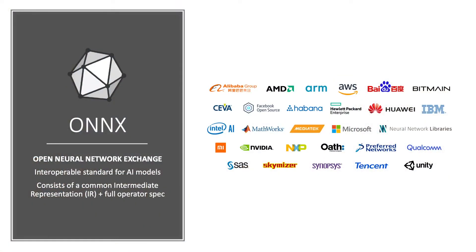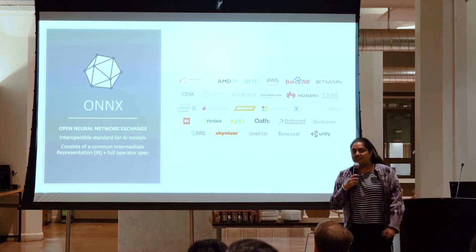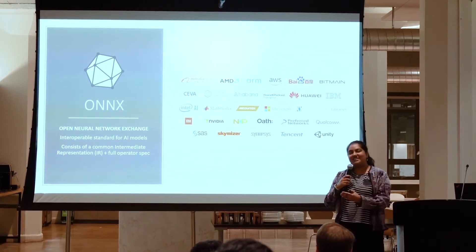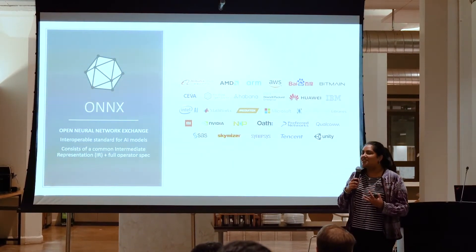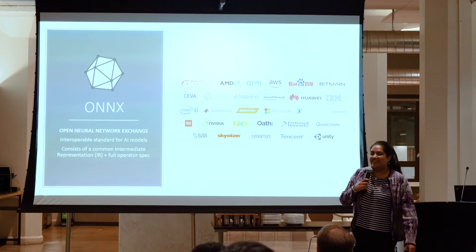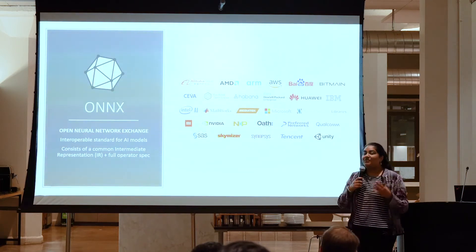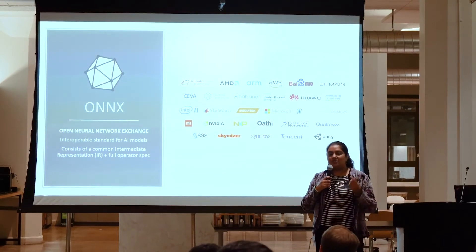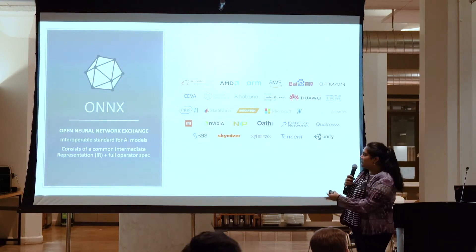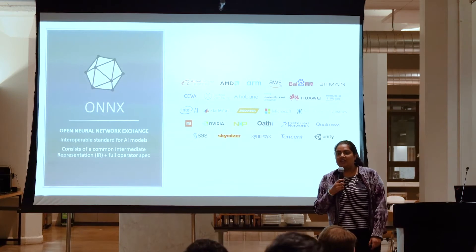Onyx stands for the Open Neural Network Exchange. It's an interoperable standard for AI models. Microsoft got together with community partners — specifically starting with Facebook originally. Facebook was working on both Caffe and PyTorch and needed a way to tie their two development teams together. So Onyx was founded with Microsoft and Facebook originally. Now we have three other founding partners — Amazon, NVIDIA, and Intel — on our larger steering committee, and over 26 other companies that are part of our consortium and ecosystem.